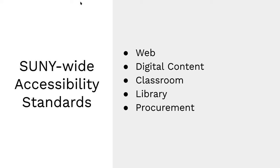In terms of how we evaluate whether we're reaching our accessibility standards, there are worldwide standards we utilize. These apply to web and digital content — generally the documents we're creating, what we're doing inside the classroom, how we're offering the learning environment. The library is also involved, as well as how we go about procurement, particularly to ensure we are purchasing applications and digital assets that are accessible and having a process to ensure what we have and buy meets our standards.